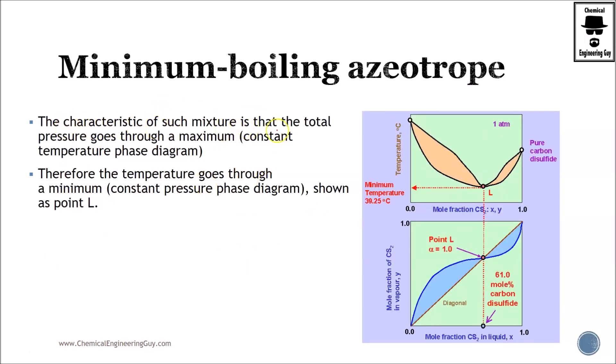So what do we have here? A minimum-boiling azeotrope will have a maximum point whenever we have constant temperature, and we will have a minimum point when we have constant pressure.